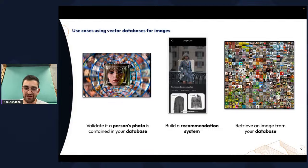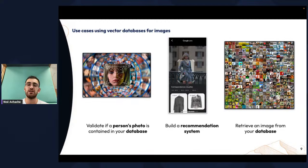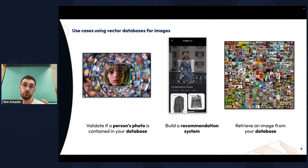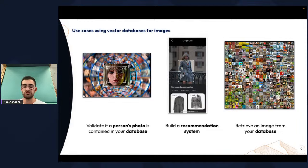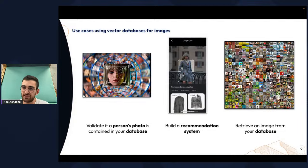Another use case is building a recommendation system like Google Lens. Whenever you take a picture of clothes, it recommends similar clothes from millions in its database — and to do so in a fraction of seconds, it essentially embeds all the clothes, embeds your photo, and compares them using a vector database. Finally, if you have a very large image database and don't know how to leverage its potential, use a vector database to retrieve images from other images.